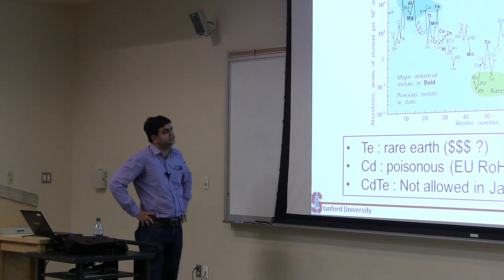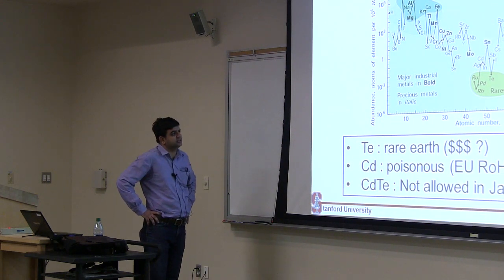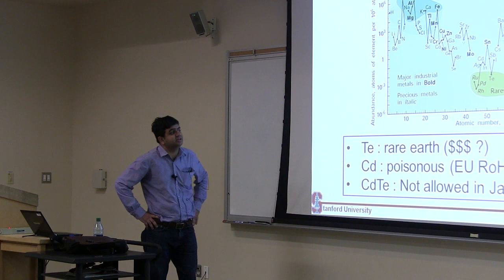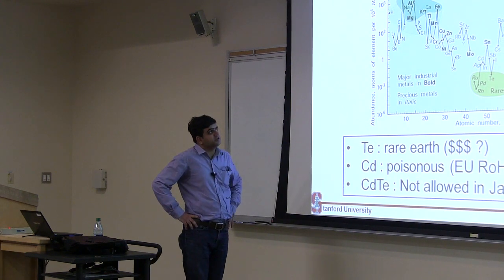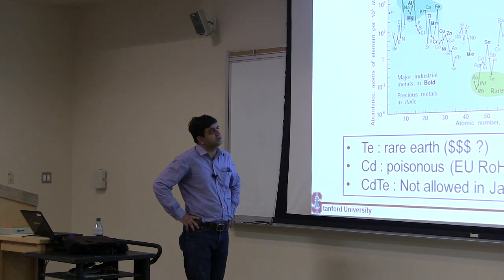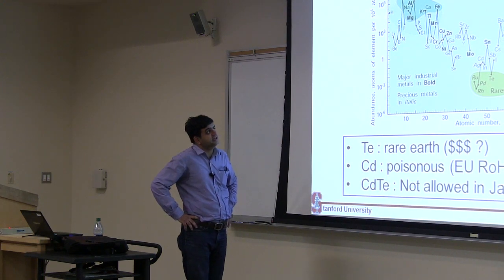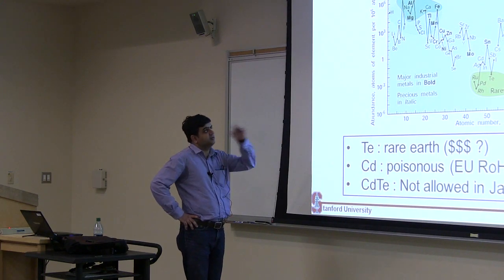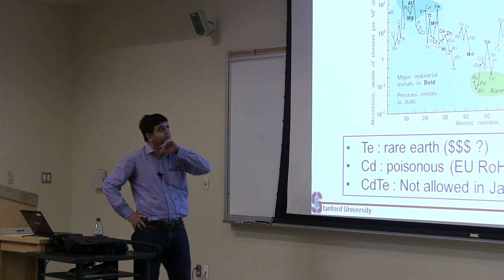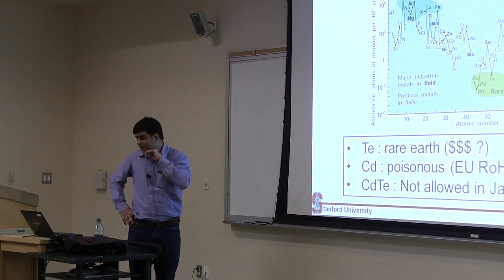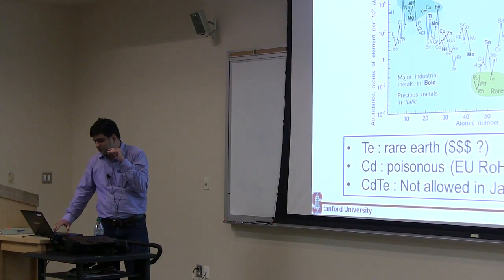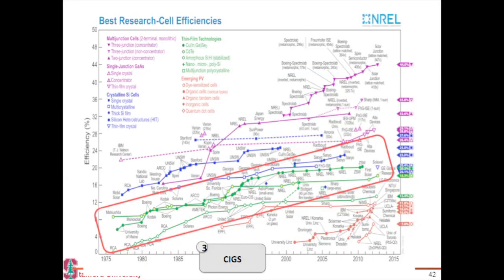Their efficiency maxes out at around 16%, and including First Solar, companies have been looking into alternatives to cadmium. First Solar has a group in Oakland of around 80 people looking at alternate technology — specifically CIGS-based solar cells.